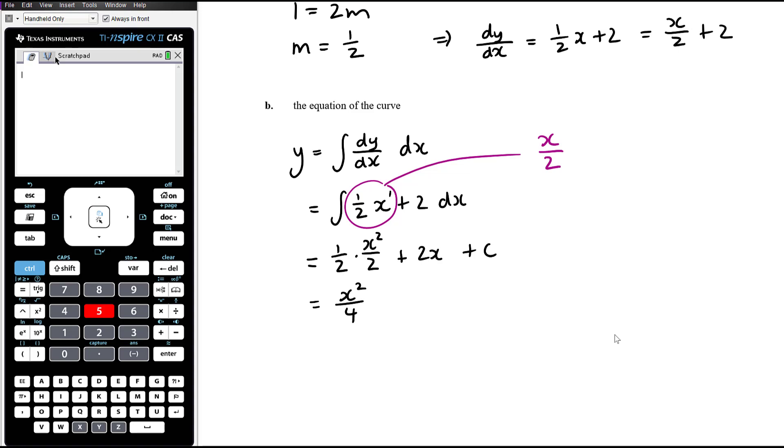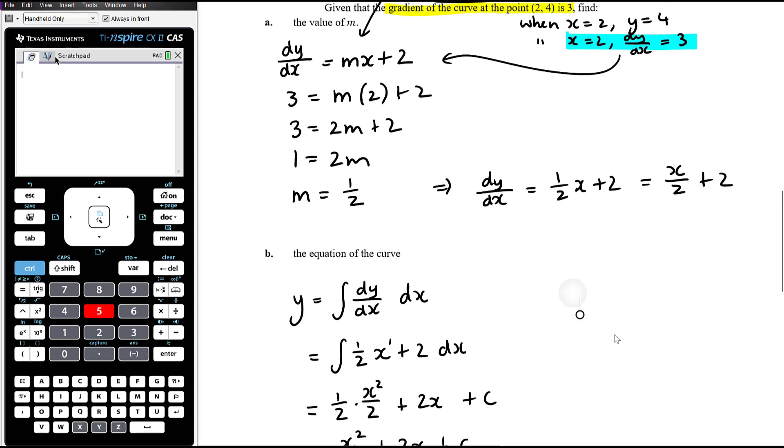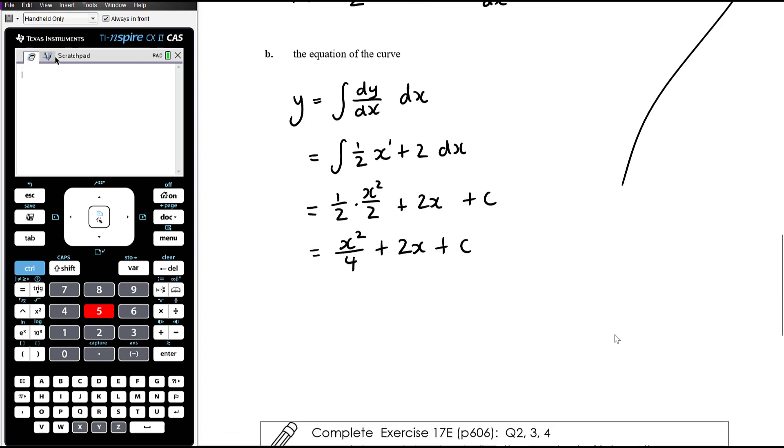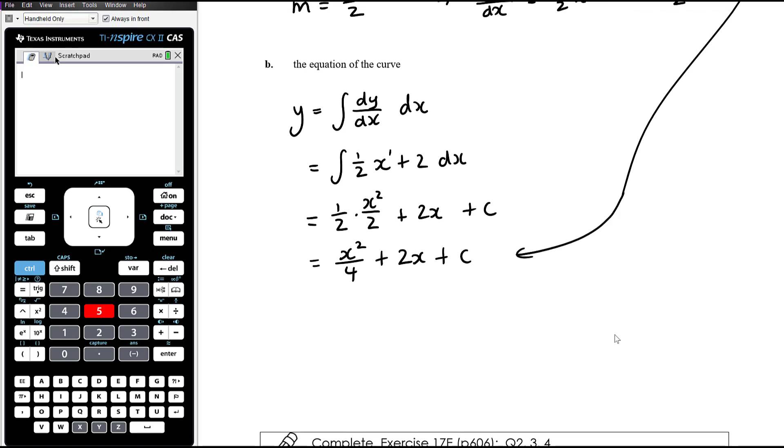Okay, so you should get to a point where you can do that straight away. So it's x squared on 4 plus 2x plus c. And this is where we then need to use that other bit of information. So we know when x is 2, so let's put that in here, y is 4 when x is 2.